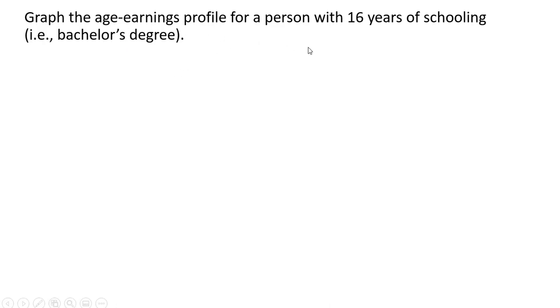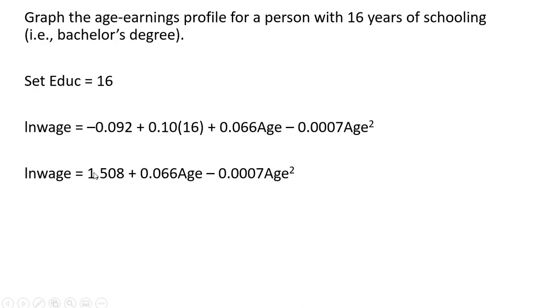And now we're going to graph the age-earnings profile for a person with 16 years of schooling. I could have picked any level of schooling, 16 is what I chose. So we're going to set the education variable in our regression equal to 16. So instead of 0.10 times education, we set it to 16, and we're going to simplify this a little bit here. 0.10 times 16 is 1.6, and 1.6 minus 0.092 gives us this 1.508.